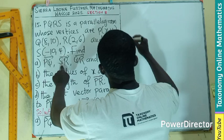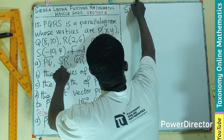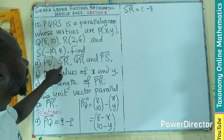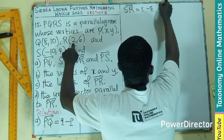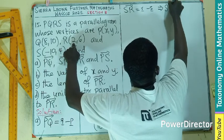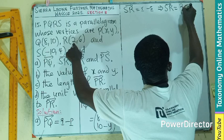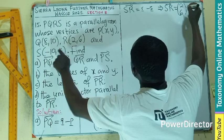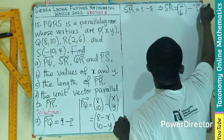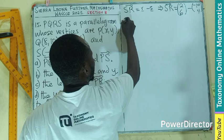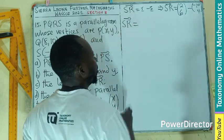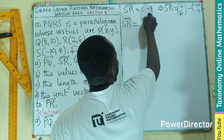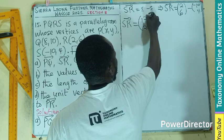Then the second part will be vector SR, which is also position vector R minus position vector S. So SR becomes (2, 6) minus S itself, which is (-10, 4). This means that SR will be 2 minus -10, that will be 12, then 2. So I have (12, 2).